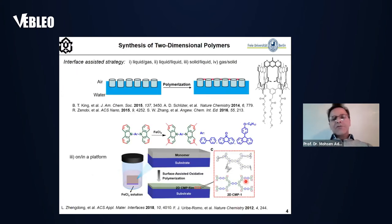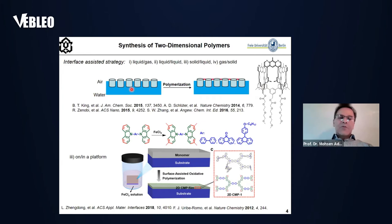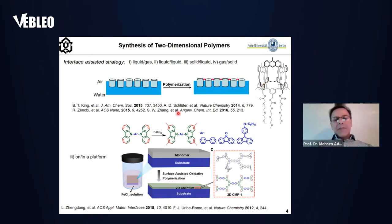There are several strategies to do this. The most well-known is the interface-assisted strategy, by which we are able to produce two-dimensional polymers. In this strategy, amphiphilic monomers produce a monolayer at an interface like an air-water interface. By a stimuli factor like UV radiation, we are able to connect monomers laterally — for example, by connection of monomers via triple bonds — to produce a two-dimensional polymer. Depending on the monomer structure, we can do this polymerization at different interfaces, like a liquid-solid interface.